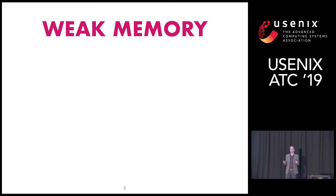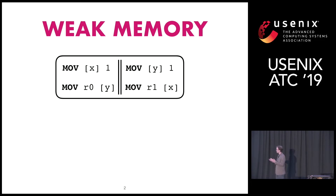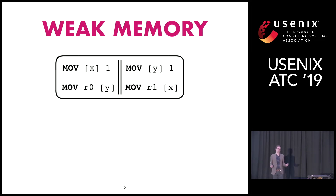To explain weak memory, I want to show you a tiny concurrent programme. Imagine two shared locations, x and y, both initially zero, and two threads. On the left-hand thread, I'm putting a one into x and then reading from y, and in the right-hand thread, I'm putting a one into y and then reading from x. So what can happen when I run this programme?